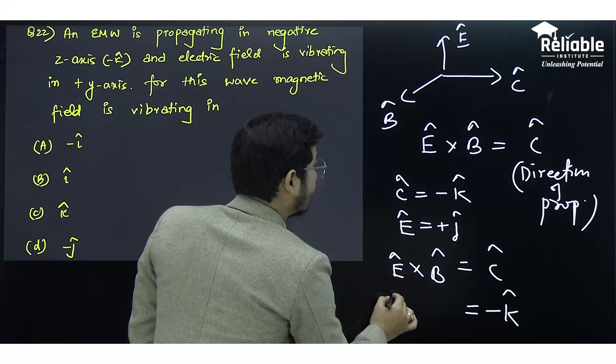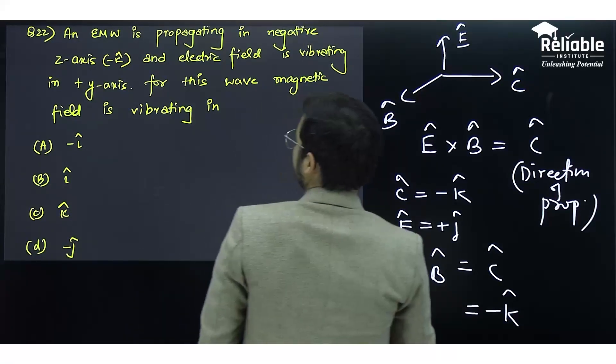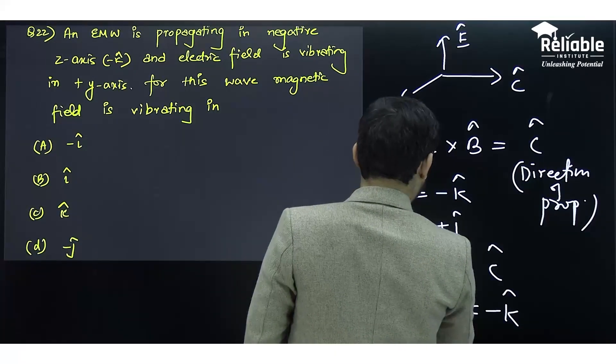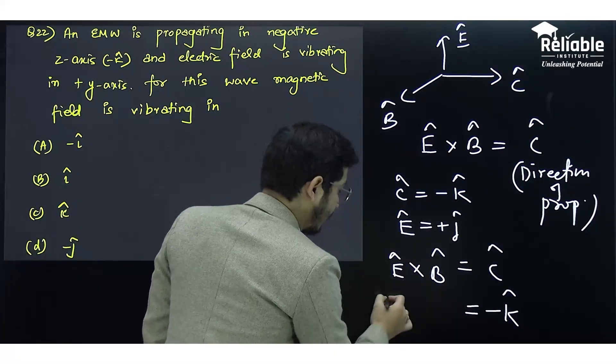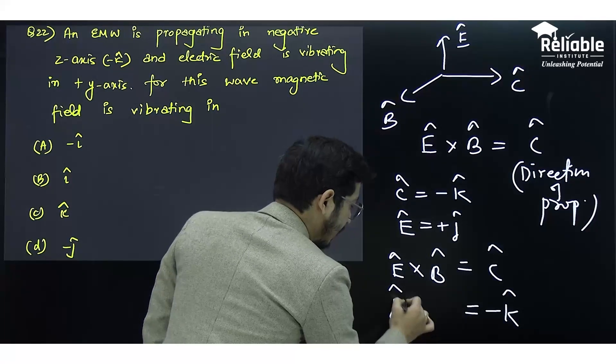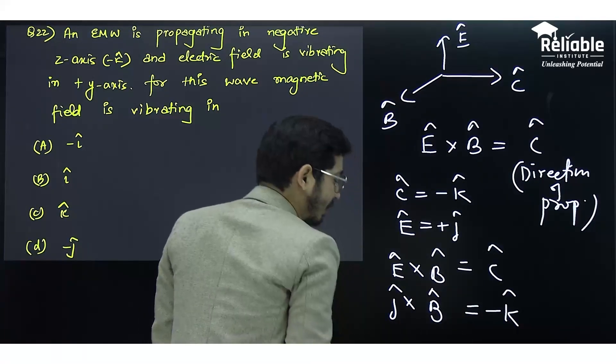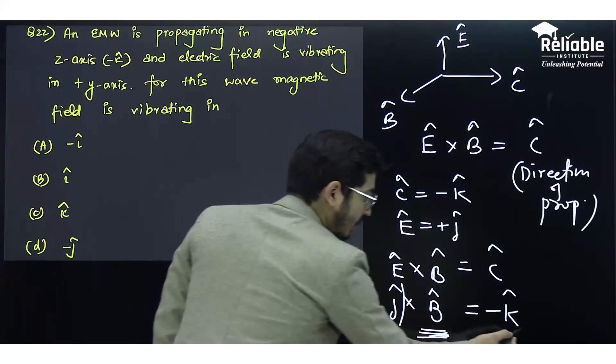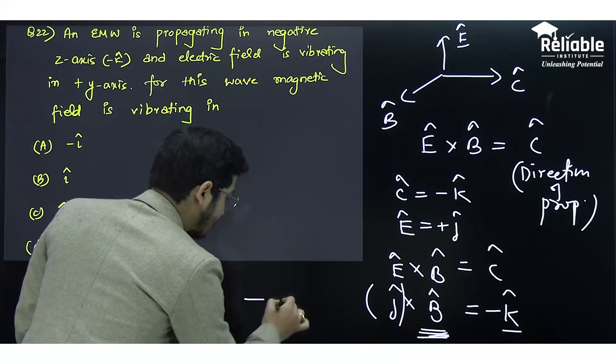There is a little correction. The electric field is given as ĵ. We are supposed to calculate the direction of B̂. We know ĵ, and we have to find some vector that will give us -k̂.